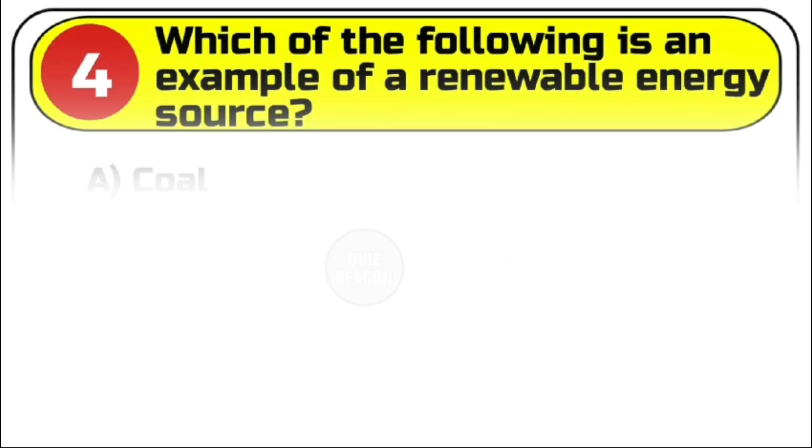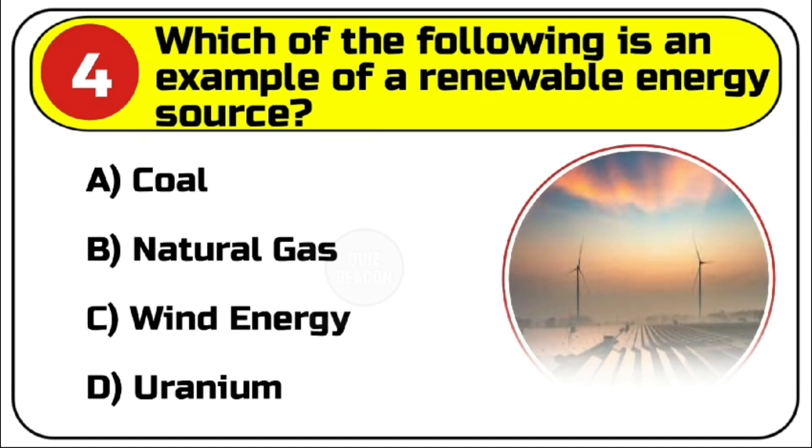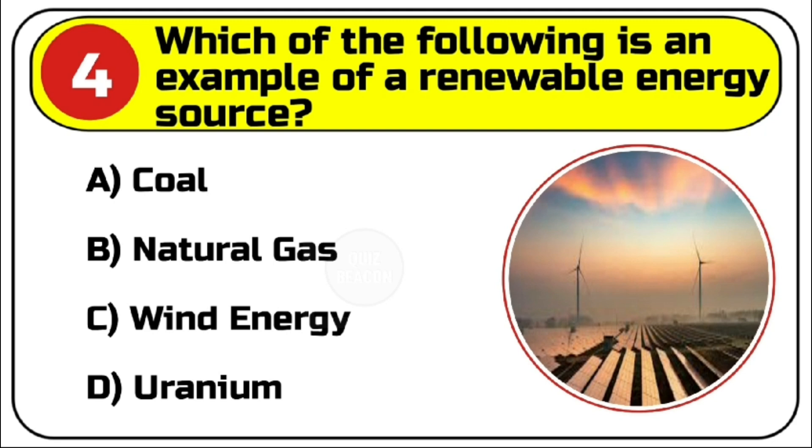Question number 4. Which of the following is an example of a renewable energy source? Options are A. Coal. B. Natural gas. C. Wind energy. D. Uranium.